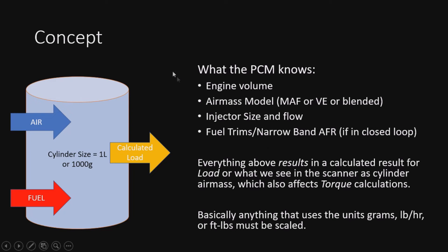The PCM knows the volume of the engine — we can tell it this. It knows the models; we can tell it the fuel model. If it's in closed loop, it's going to know the AFR as well, which acts as another checksum. Everything above results in the calculated load — this is the big number we need to affect, because this is what's running us out on the map table. 512 grams per second is another way of saying calculated load, which translates into the actual grams per cylinder. Basically anything in units of grams, pounds per hour, or foot-pounds — anything having to do with airflow or fuel — must be scaled accordingly.